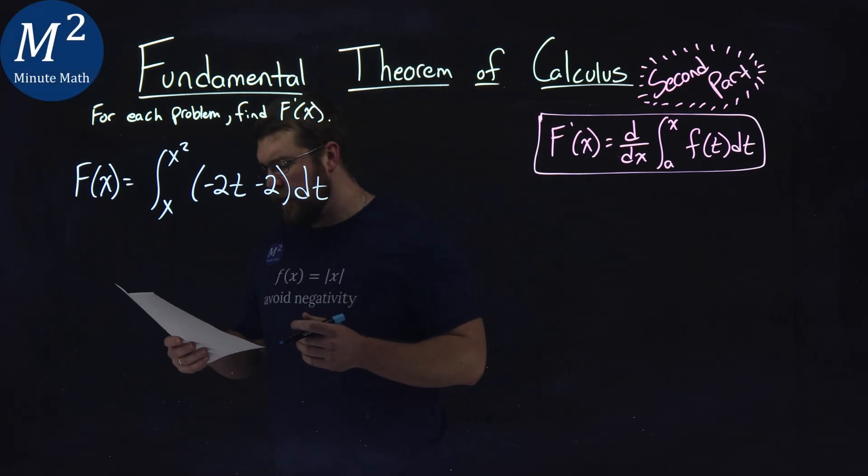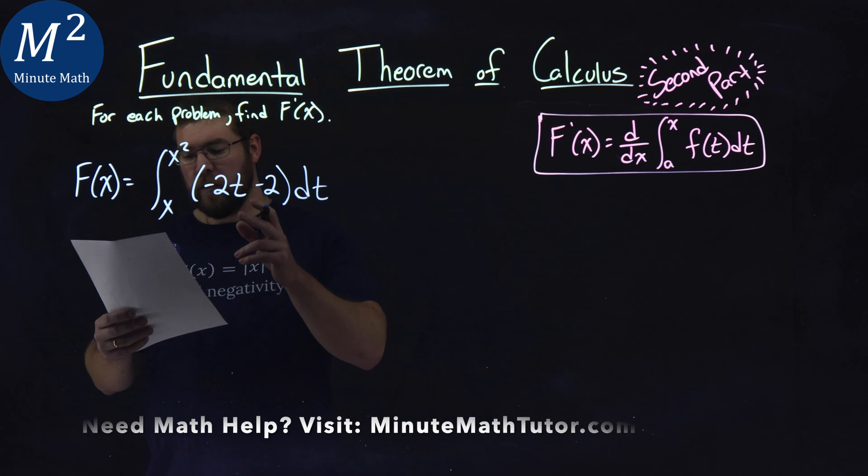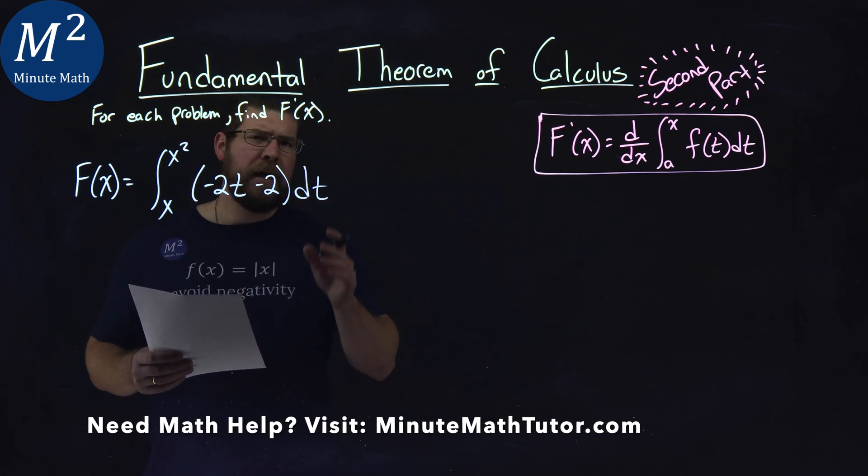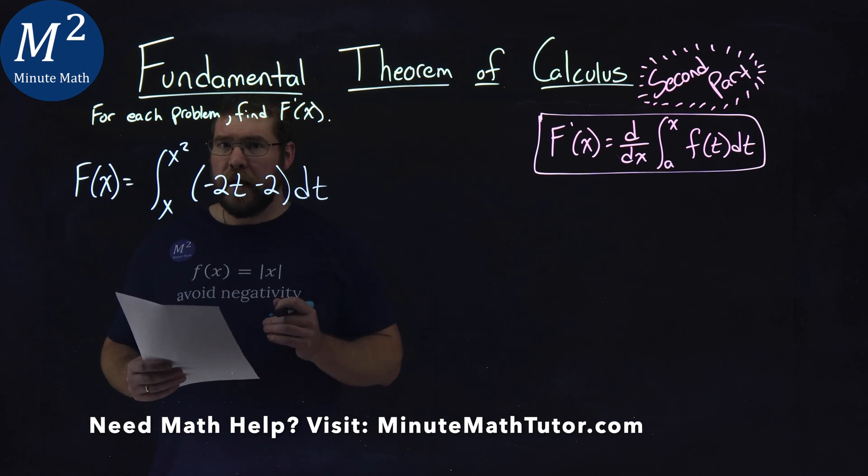We're given this problem right here. f of x is equal to the integral from x to x squared of negative 2t minus 2 dt, and we need to find f prime of x.